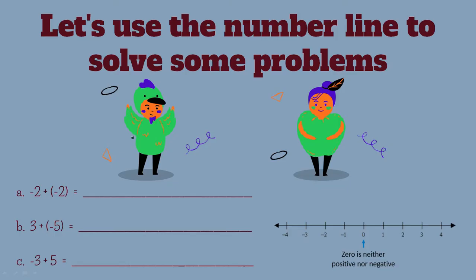Let's use the number line to solve some problems. You have negative two plus negative two. The positive sign multiplies with the negative sign and you end up with negative two minus two. Anytime a positive is next to a negative number, it will give you back a negative sign.